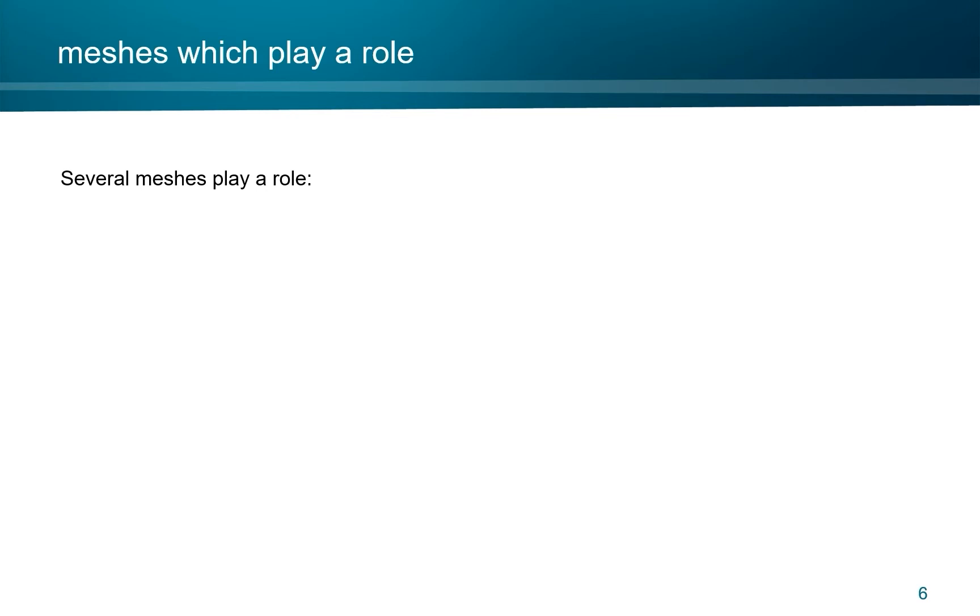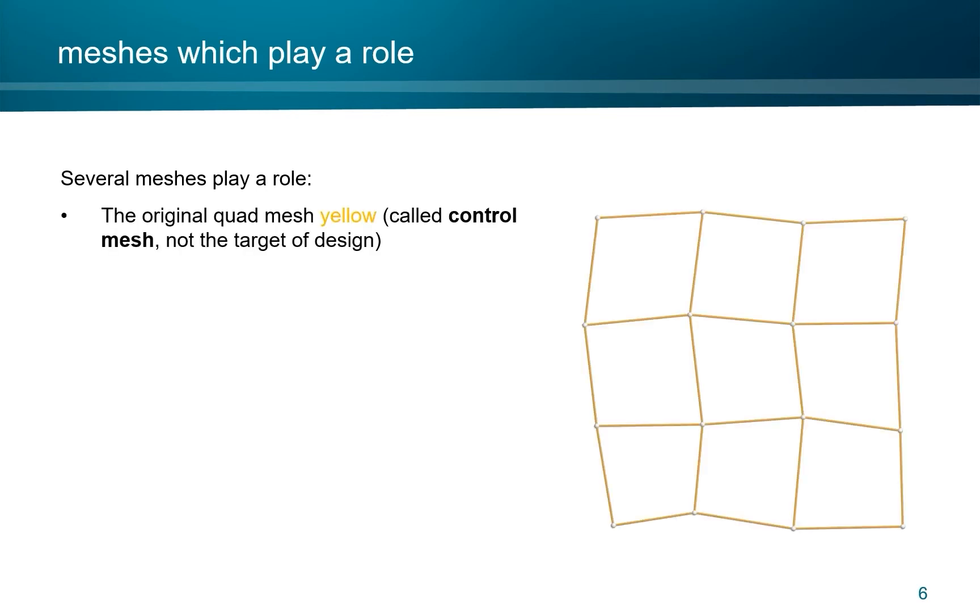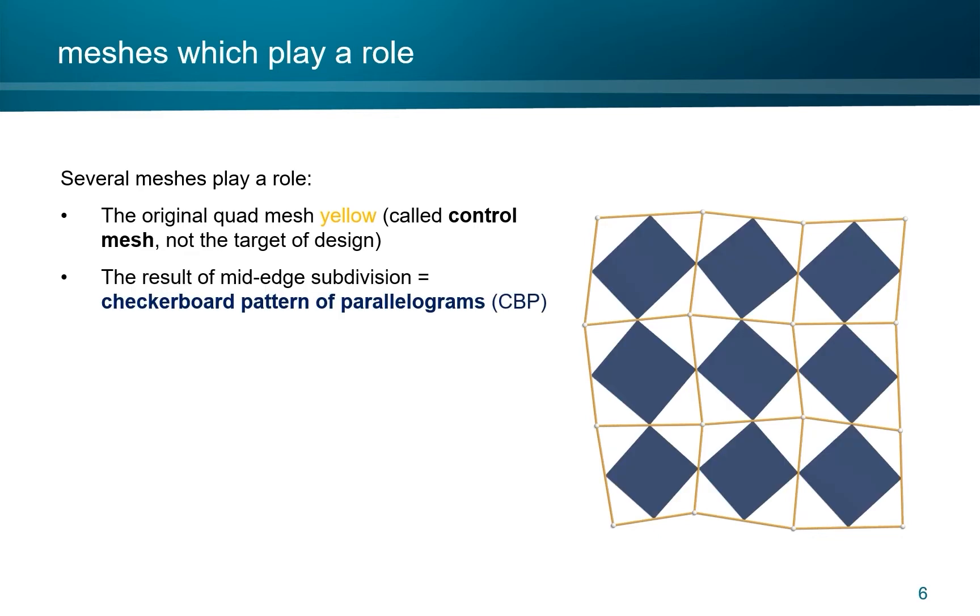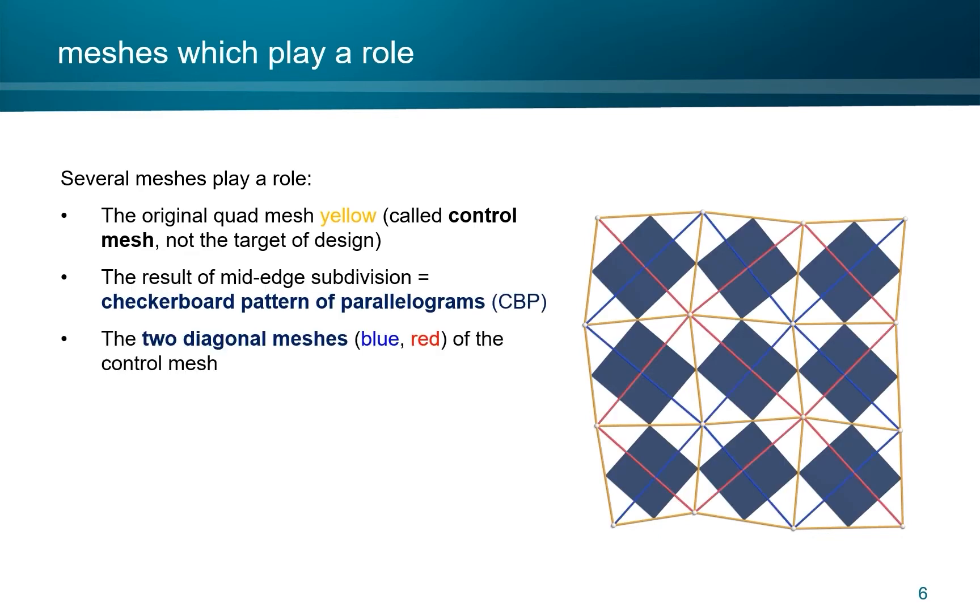Several meshes play a role here. The original quad mesh, shown in yellow, we call it the control mesh, but it is not the target of design. The target of design are the following three meshes: the checkerboard pattern of parallelograms and the two diagonal meshes of the control mesh, shown here in blue and red.